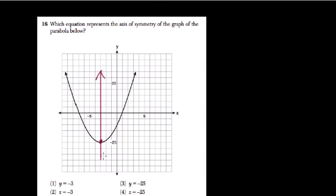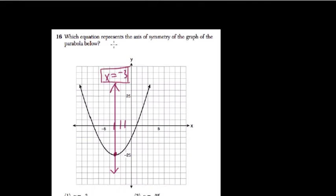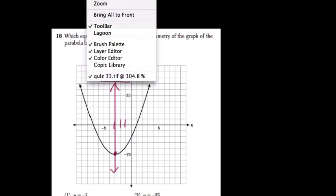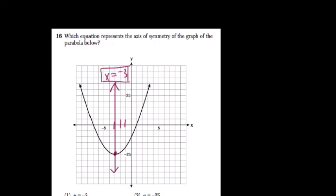In this case, it's the vertical line x equals negative 1, negative 2, negative 3. So it's x equals negative 3. This is just the line x equals negative 3, where every point has an x value of negative 3. Choice 2.